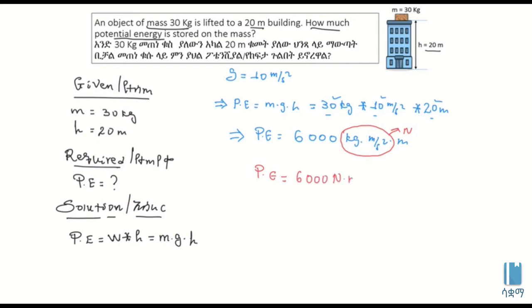Newton times meter. This is a Newton meter. This is the potential energy. Potential energy is equal to 6,000 Newton meters. This is a kilojoule.